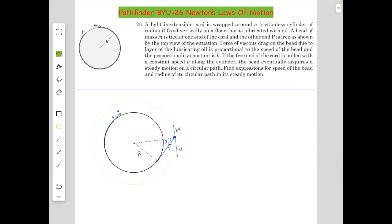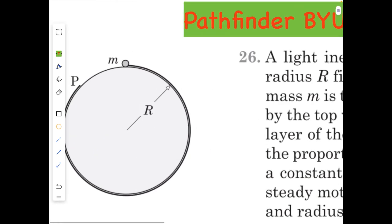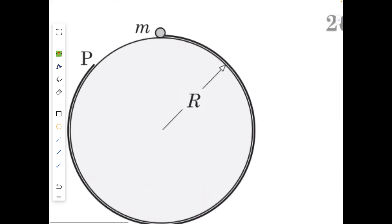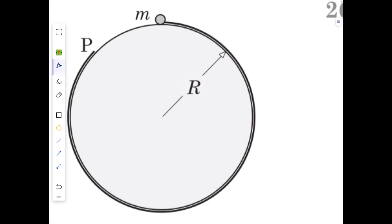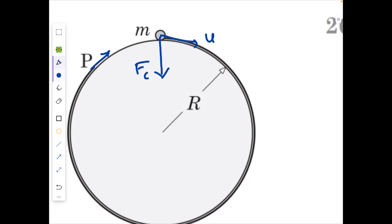So first of all, let's look at what exactly is happening here. As we start pulling from P, this mass acquires a speed u along the tangent. But here, there is no force which is able to provide it the centripetal force required for it to stay in this orbit at a radius R. So it will move slightly away and try to increase its radius. So the centripetal force required would decrease.